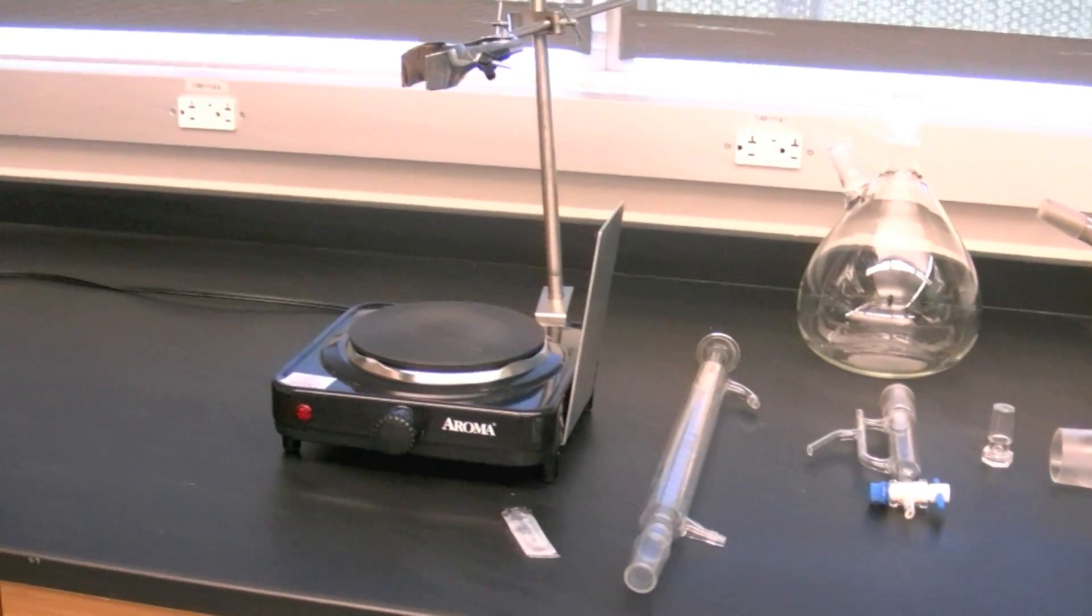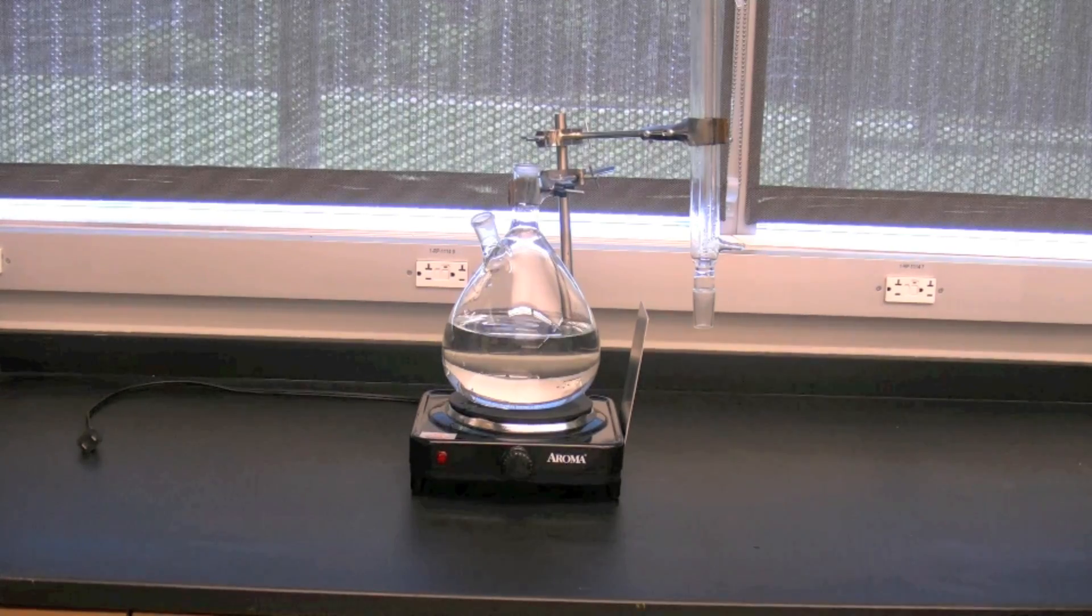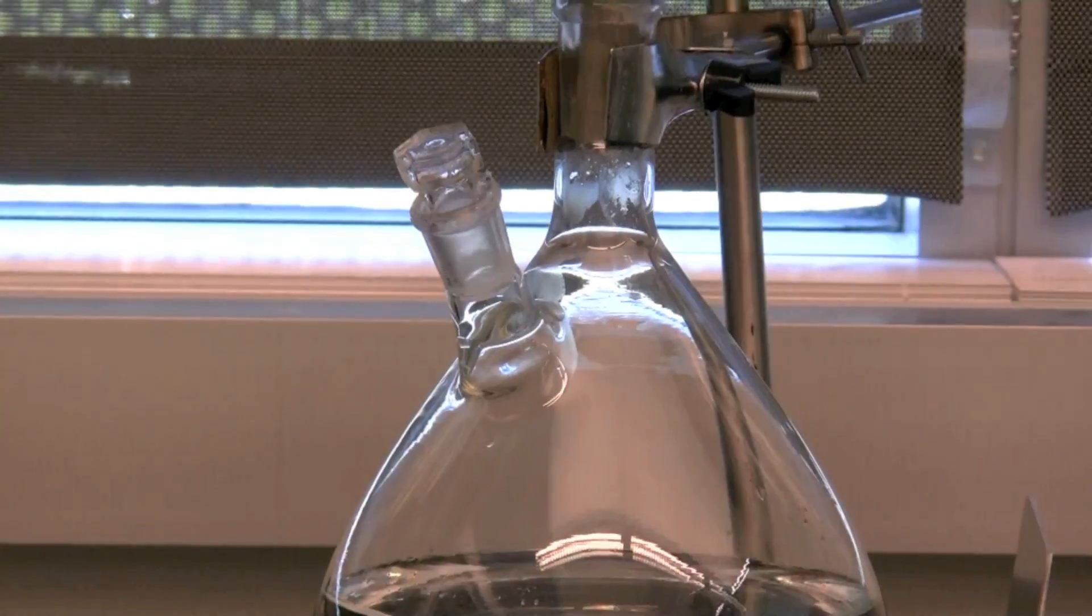Fill the boiling flask with approximately 1.25 liters of distilled water. Place the boiling flask on top of the hot plate and secure it in place with a tube clamp around the neck of the flask.